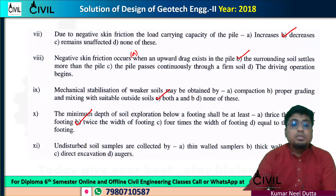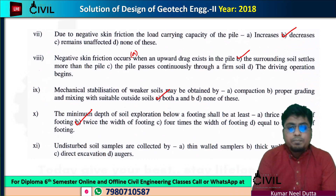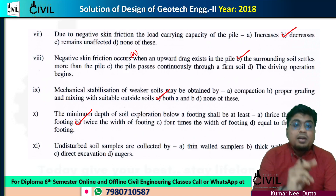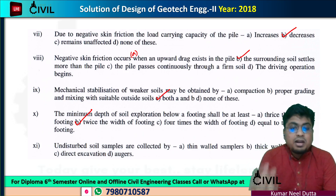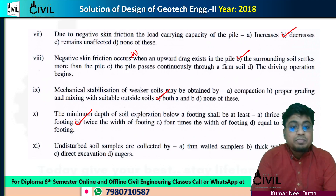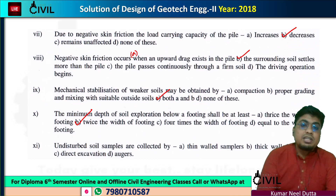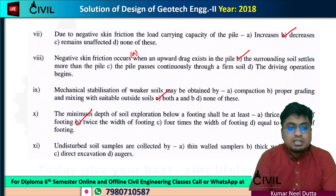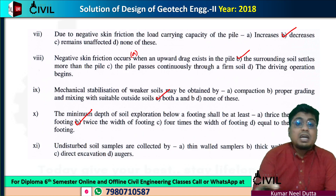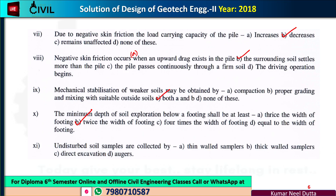The next question is about disturbed versus undisturbed samples. An undisturbed sample means the natural properties, mineral composition, and structure of the soil are preserved. A disturbed sample means the properties are altered. So you must test undisturbed samples for accurate results. Sampling methods include thin wall sampler, thick wall sampler, direct excavation, or augers.